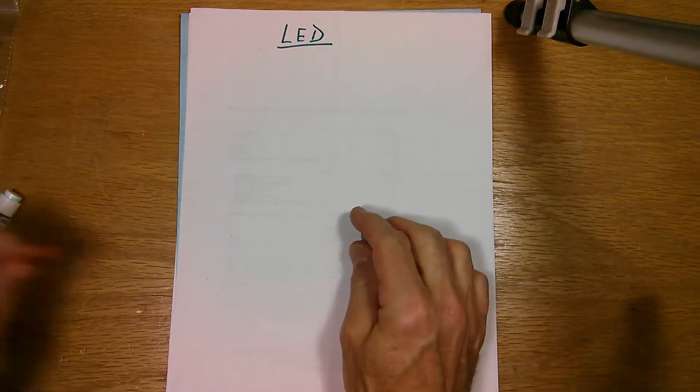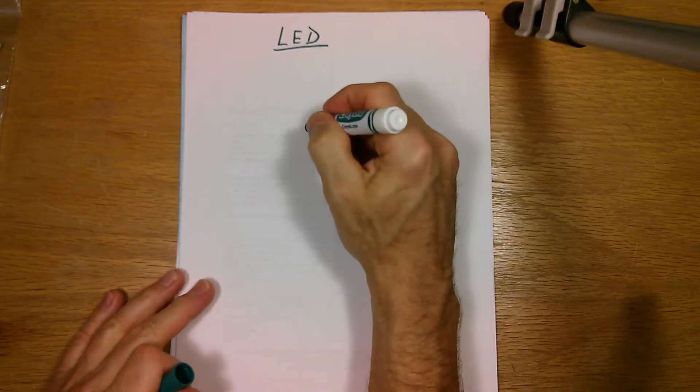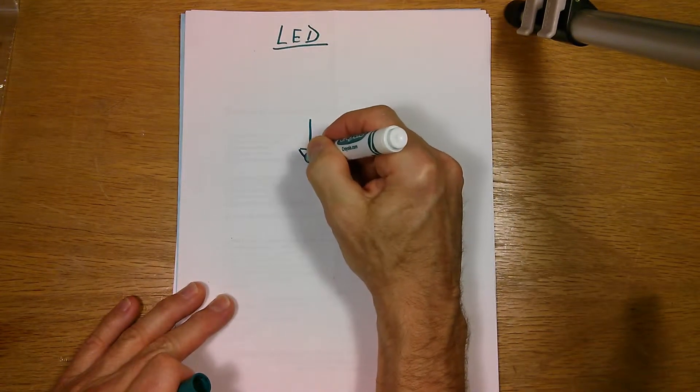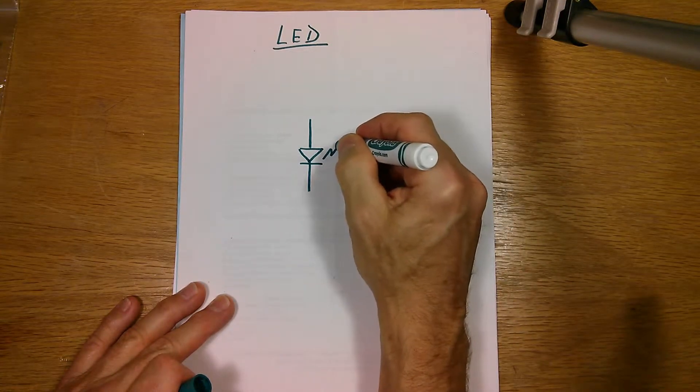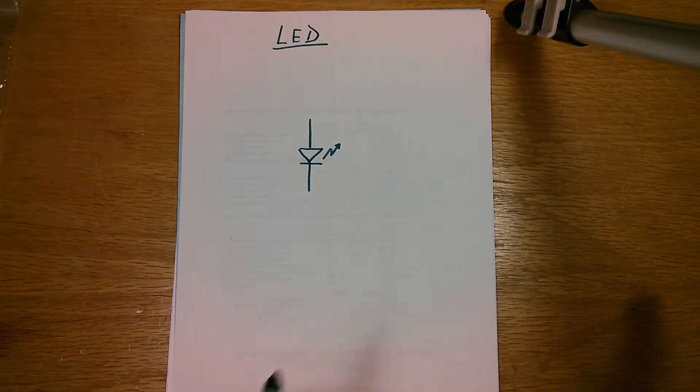The schematic symbol for a light emitting diode is like this. And then it usually has a little arrow like that to indicate that light comes off of it. That's a light emitting diode.